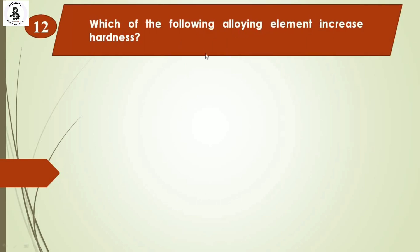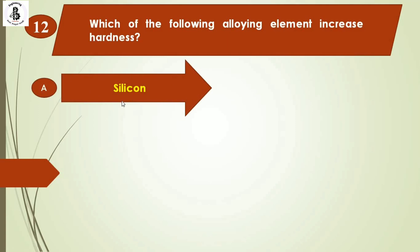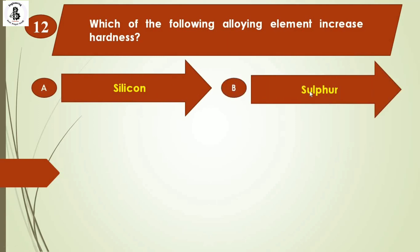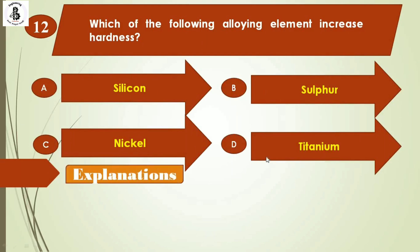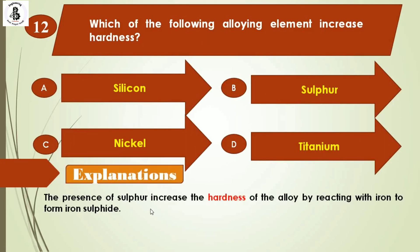Question 12: Which of the following alloying elements increases hardness? Option A: silicon, Option B: sulfur, Option C: nickel, Option D: titanium. The presence of sulfur increases the hardness of the alloy by reacting with iron to form iron sulfide. The right answer is Option B, sulfur.